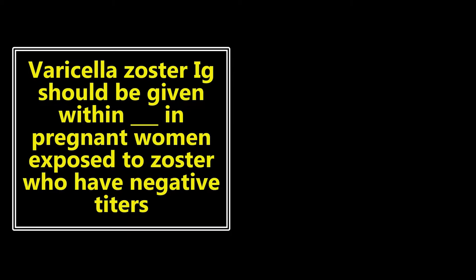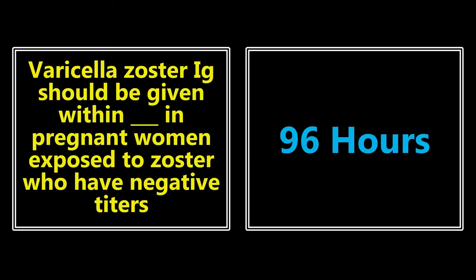Varicella zoster immunoglobulin should be given within how long in pregnant women exposed to zoster who have negative titers? If you have a pregnant patient who was exposed to zoster, it's a confirmed exposure, but they have negative titers — in what time frame do you want to give them varicella zoster immunoglobulin? It's within 96 hours. Really important to know that time.